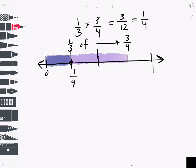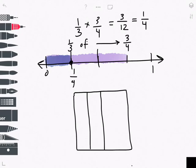I can also model the problem using an area model. So I'll start with a rectangle, and I'm looking for 1 third of 3 fourths, so I'm going to start by dividing my rectangle into fourths.